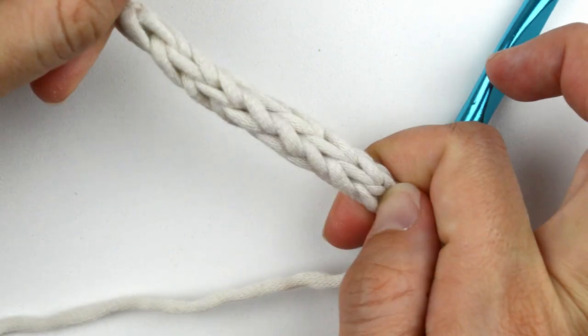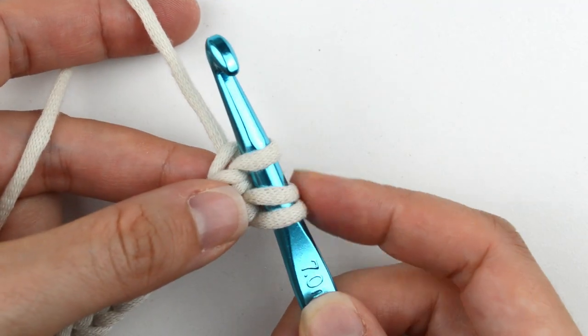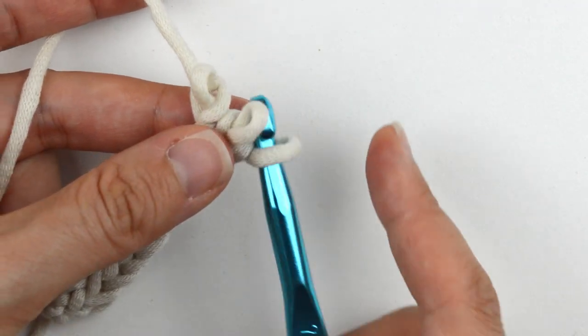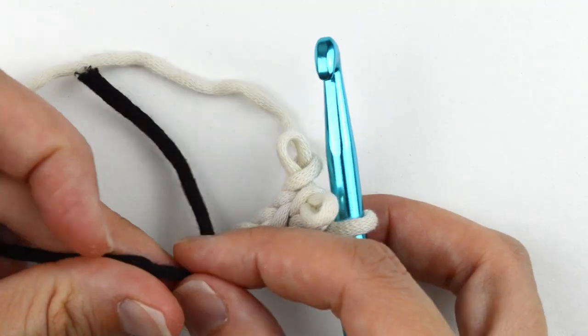If you'd like to change colors, the only thing you do differently is at the point after you pull out your hook and begin the first yarn over, just use your new piece of yarn.